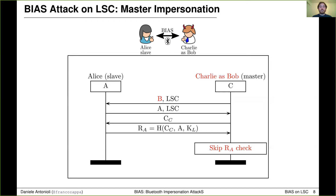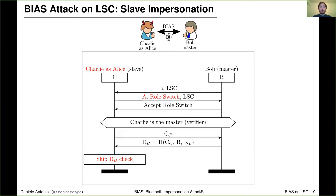The slave impersonation attack works as follows. Charlie presents to Bob as Alice and also asks Bob to switch Bluetooth role before being asked to authenticate. Bob accepts the role switch request as it is standard compliant. Charlie becomes the new master and, as a side effect, also the new verifier. Then Charlie completes unilateral authentication with Bob, ignores Bob's response, and continues the session establishment without having to authenticate to Bob.